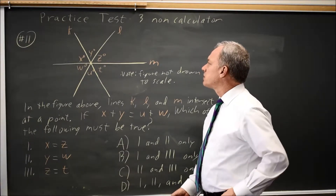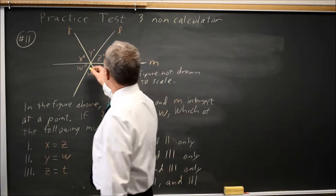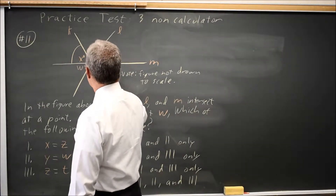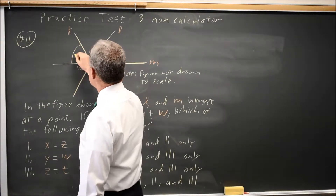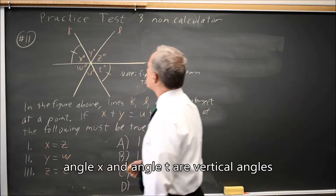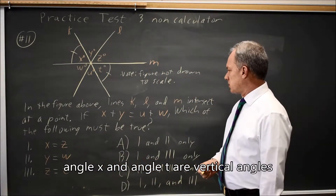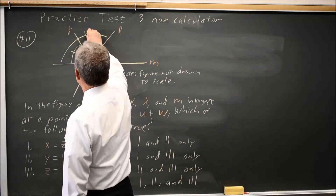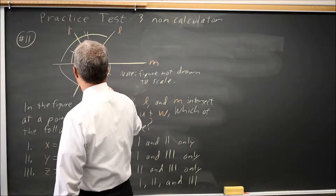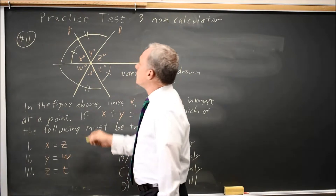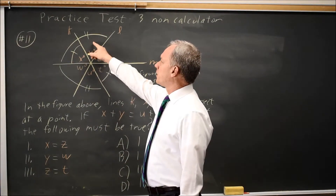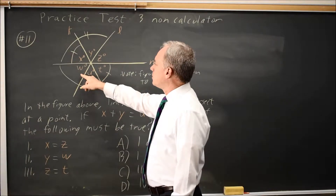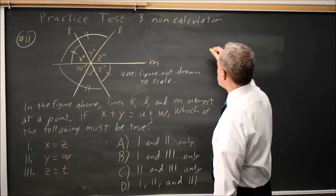So let's look at the geometry of this situation. For three lines intersecting a point, the angle at x must equal the angle at t. Also, since x plus y plus z equals 180, and u plus w plus t equals 180,